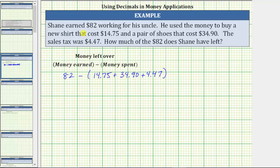Following the order of operations, we first simplify inside the parentheses, which means we find this sum: $14.75 plus $34.90 plus $4.47.